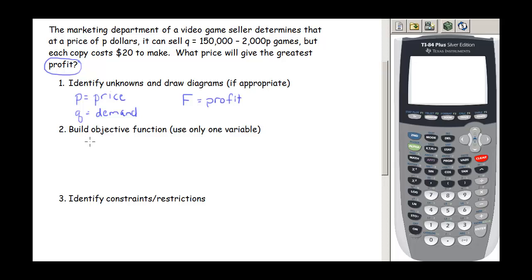So the next thing we need to do is build the objective function. Remember, our objective is to maximize the profit, so our objective function is going to be our profit function. And so profit always equals revenue minus cost. So our revenue function is our price times our quantity, and our cost function, each one costs us $20, so it's going to be 20Q. So this profit function is going to be PQ minus 20Q.